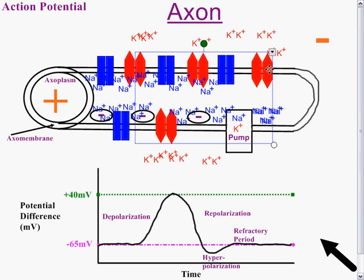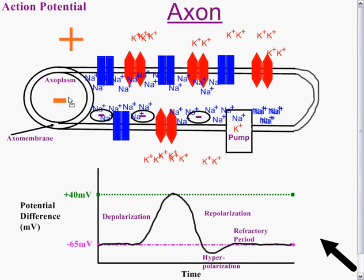Now we're back at where we started from, because we've reversed these concentrations — the outside is once again positive and the inside is once again negative. But our ion concentrations are in fact wrong: our sodium is on the inside, our potassium is on the outside, which is the reverse from normal. So even though we have repolarized and it's tracing along at a negative millivoltage, it's not ready to fire again.